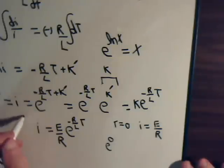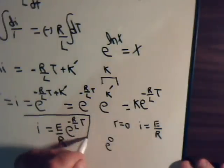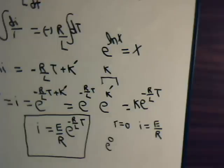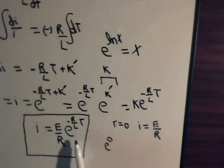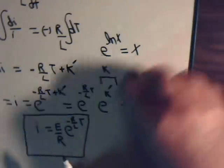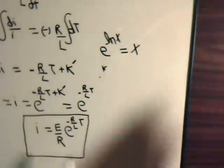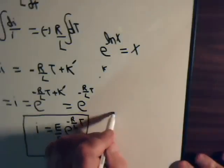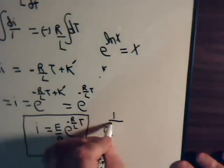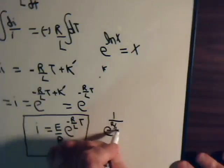And there we have our expression for the decay current. So we can see that here, this is a negative exponent. As we talked about in the previous video, that's the same thing as one over e to the R over L times t.